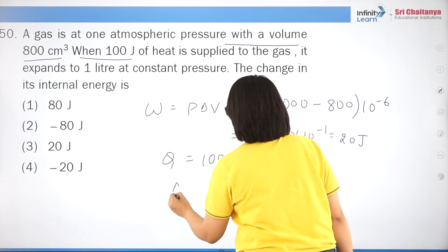Question 32: the first law of thermodynamics incorporates the concept of equivalence of heat and work, and conservation of energy. Correct answer is option 3: both A and C are true.